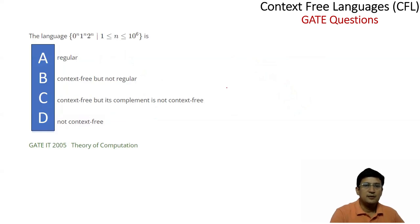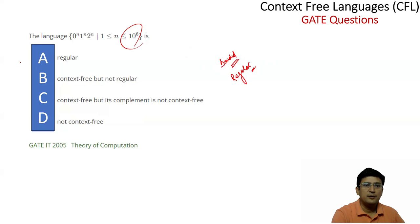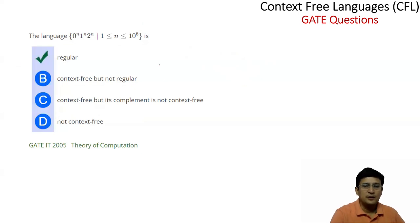This language is 0^n 1^n 2^n where 1 ≤ n ≤ 10^6. The comparison of 0, 1, or 2 is required, but it is a bounded comparison — since n has a finite upper bound of 10^6, the language is finite and therefore regular. This is the correct option. This was the GATE 2005 question.